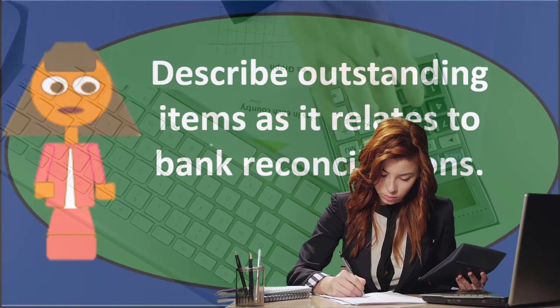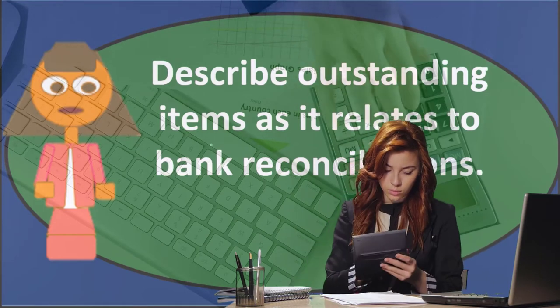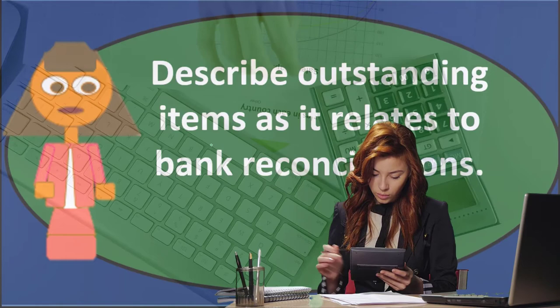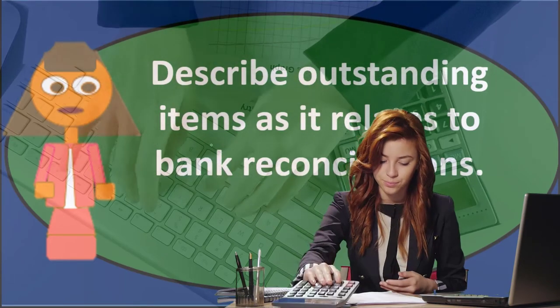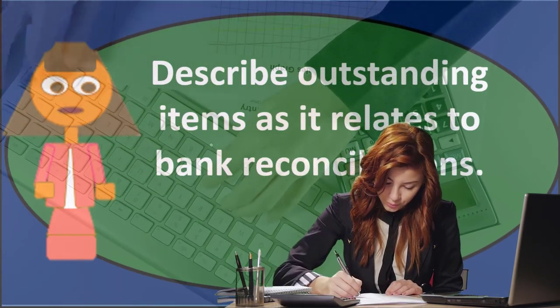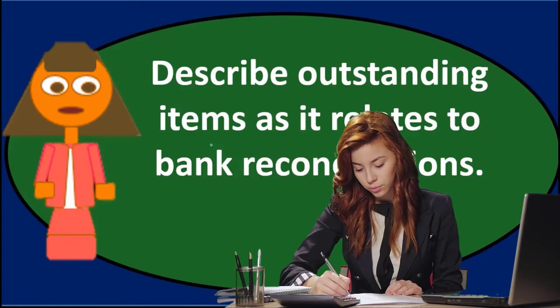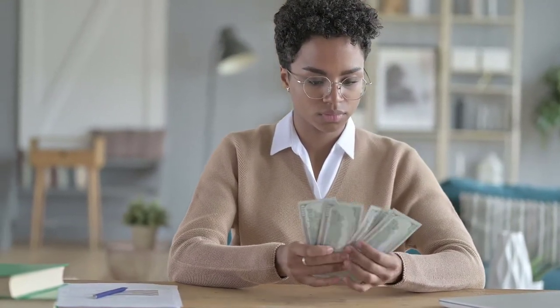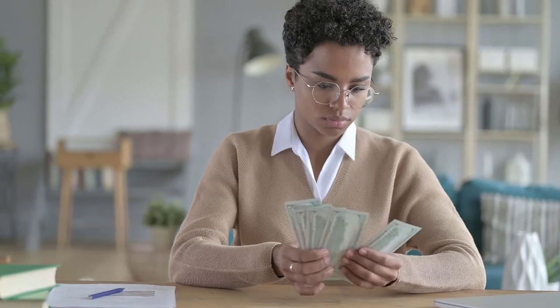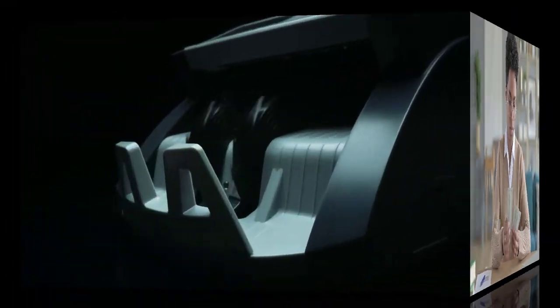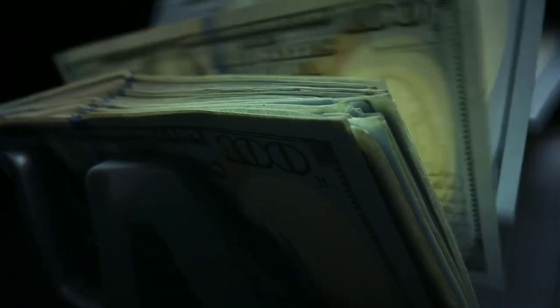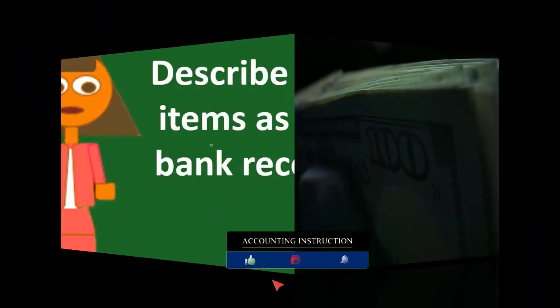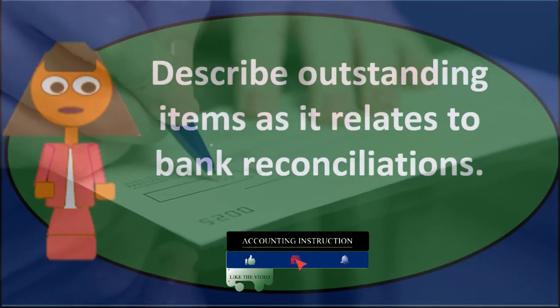Deposits should clear pretty quickly these days, so if an outstanding deposit is more than about three days old, that's probably a bit of a worry. To verify either outstanding checks or outstanding deposits, we can simply go to the bank and check whether, if it didn't clear in December, it cleared in January. If it cleared in January, it's just a timing difference — something we record as an outstanding item on the bank reconciliation.